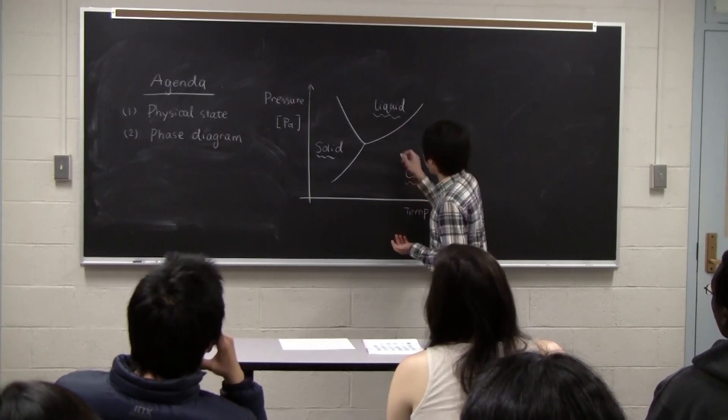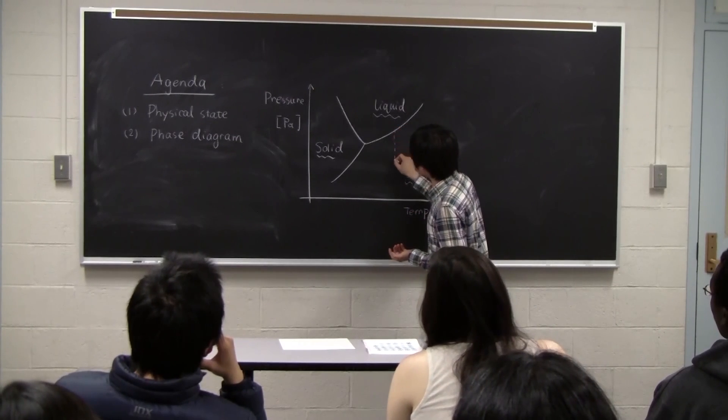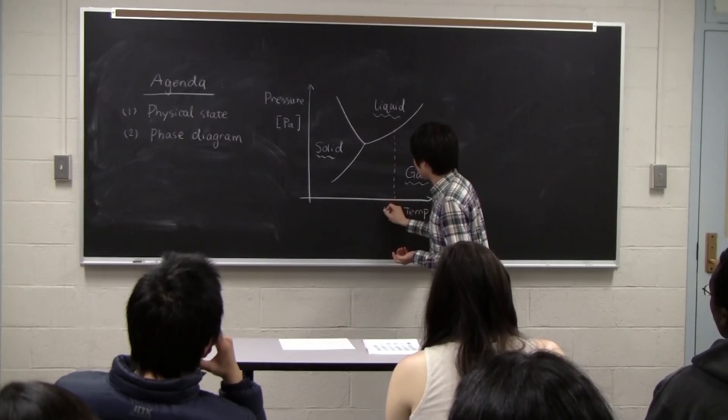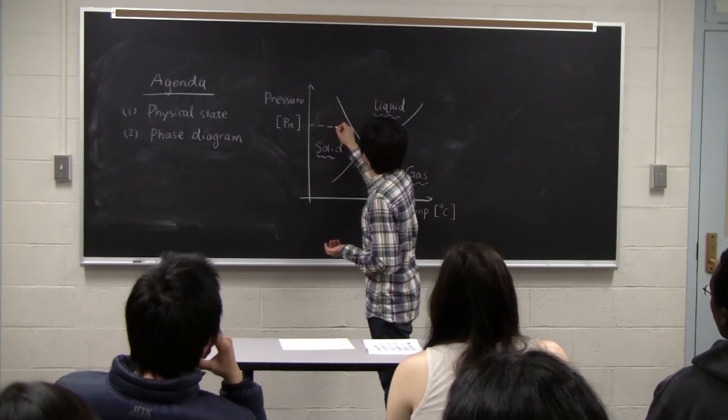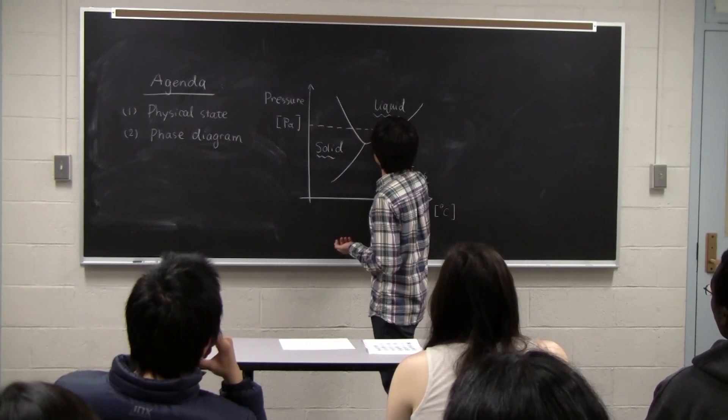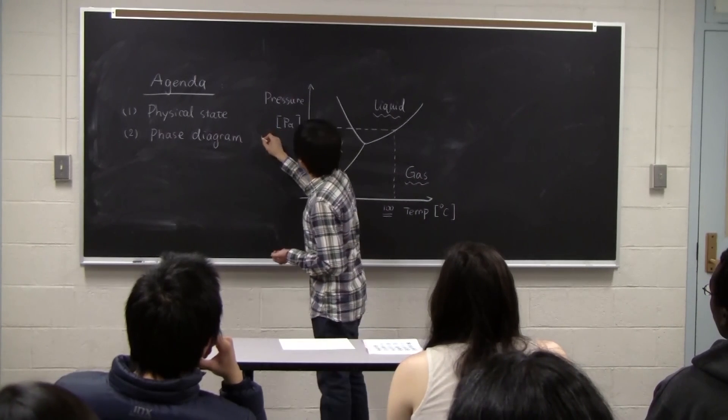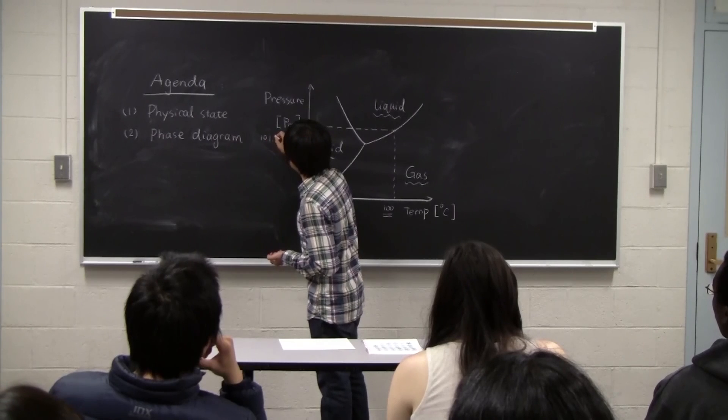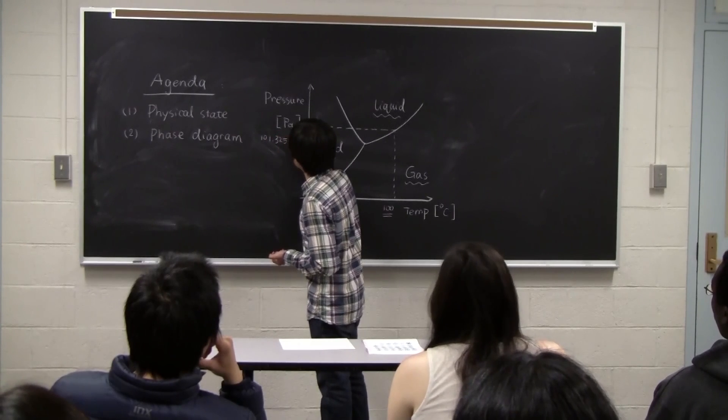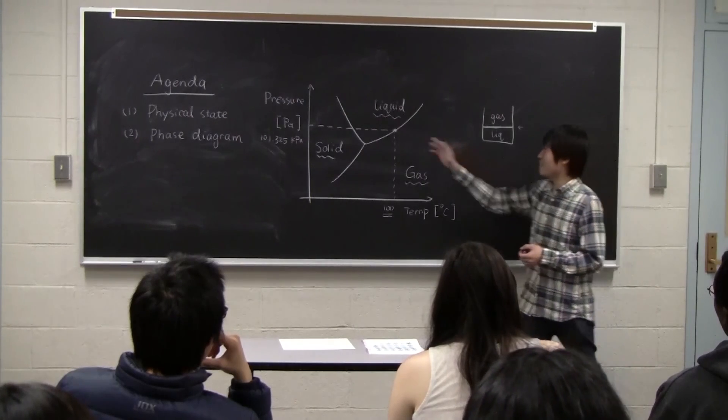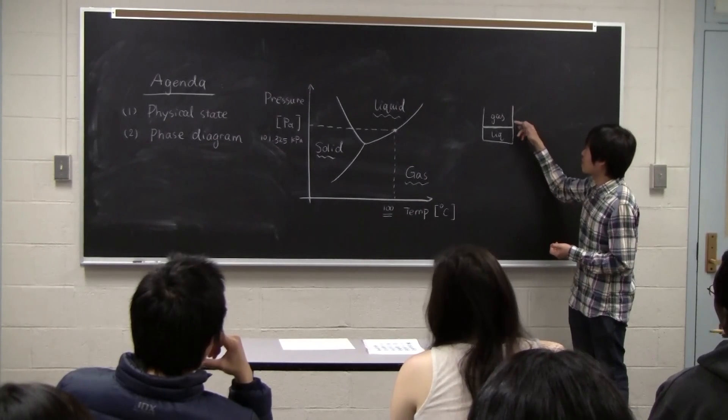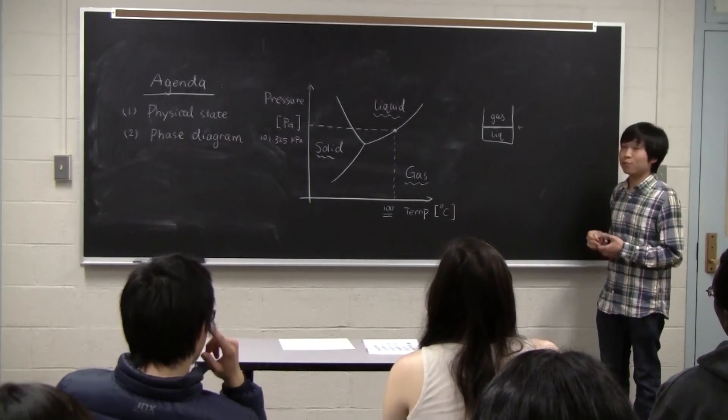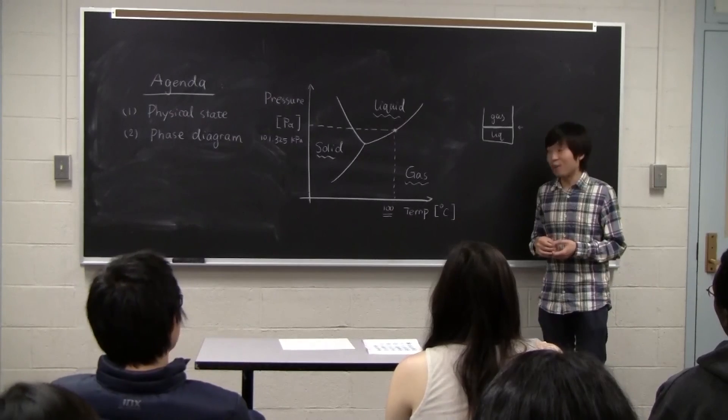So for example, at 100 Celsius and 1.325 kPa. So at this specific pressure and temperature, water can exist as gas and liquid simultaneously. So far, so clear?